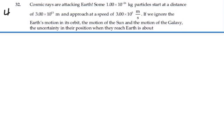Here's problem 4032. Cosmic rays are attacking the Earth. Some 1 times 10 to the minus 26 kilogram particles start at a distance of 3 times 10 to the 13 meters and approach at a speed of 3 times 10 to the 5 meters per second. If we ignore Earth's motion in its orbit, the motion of the sun, and the motion of the galaxy, the uncertainty in their position when they reach Earth is about...